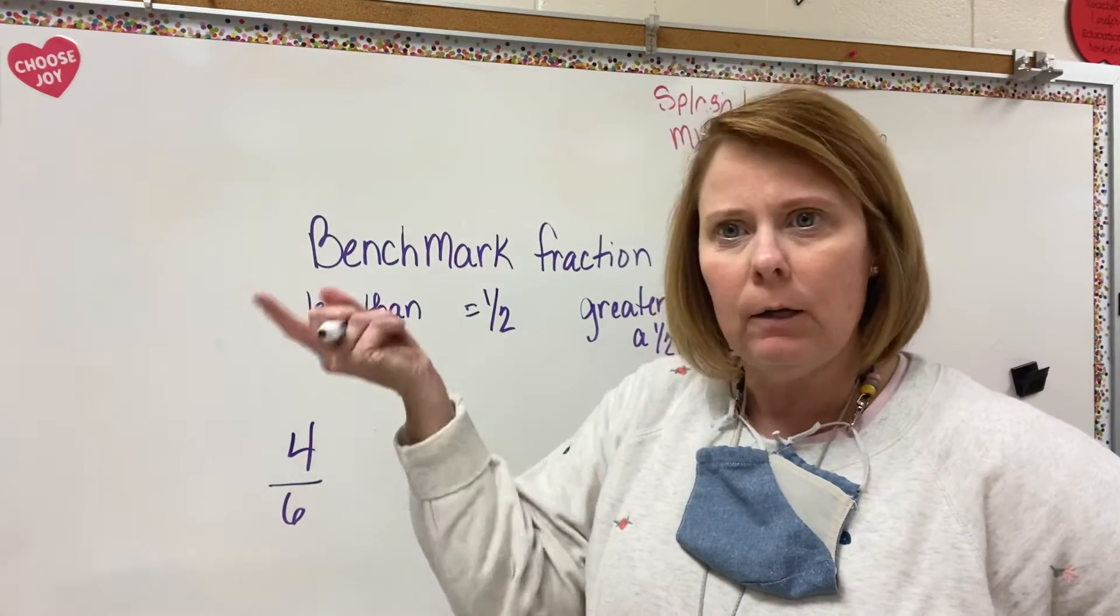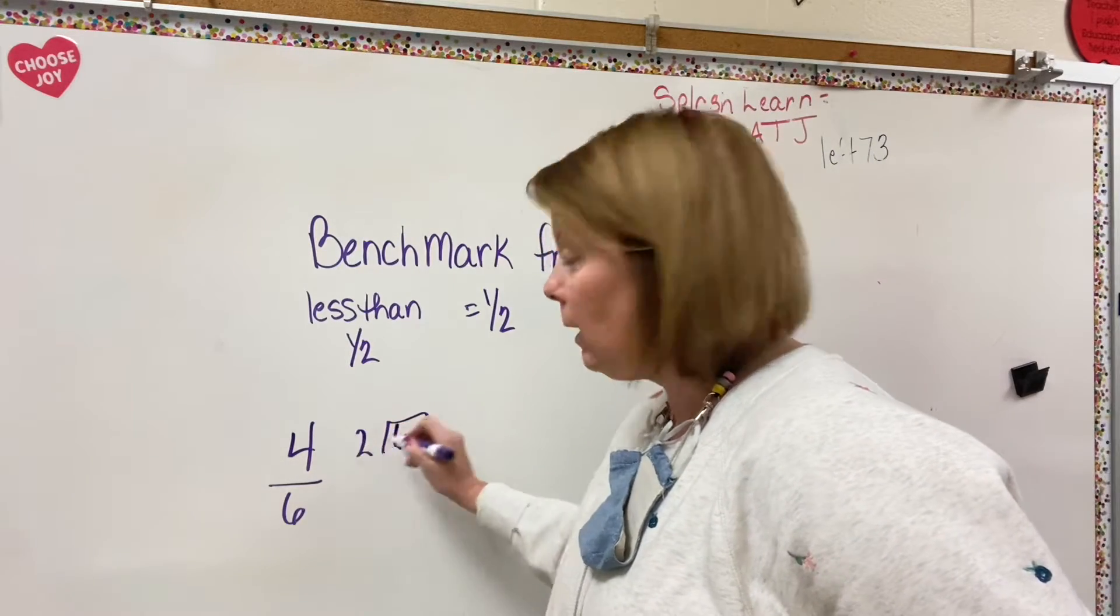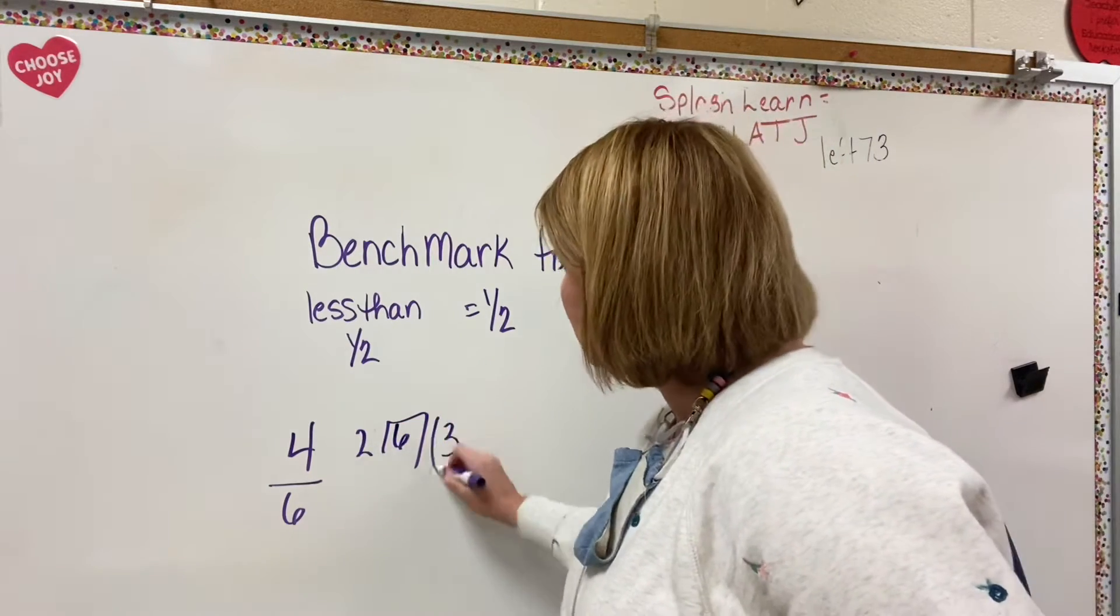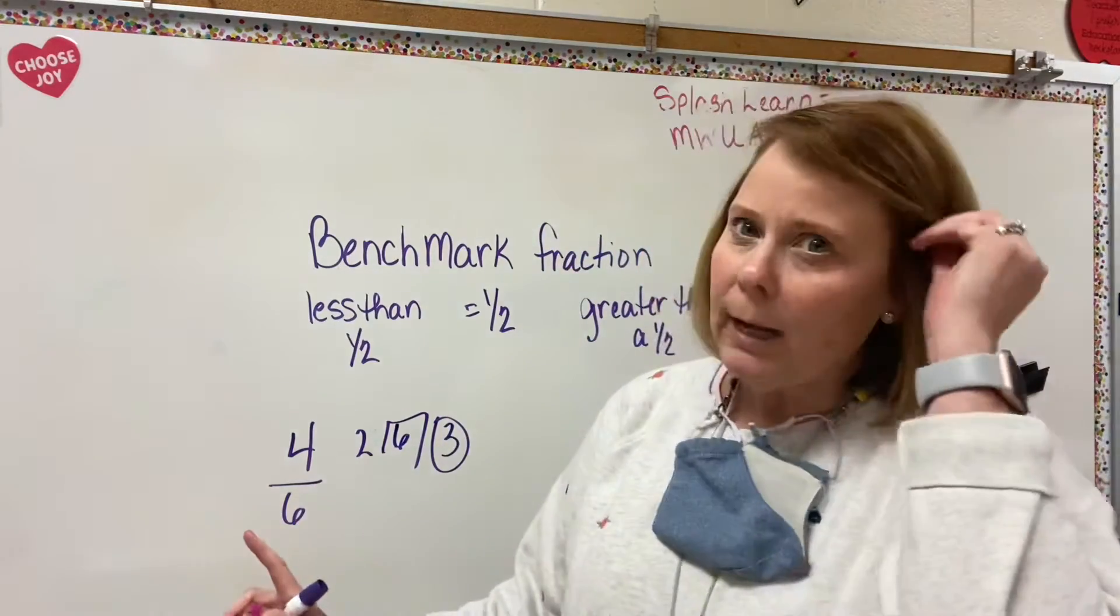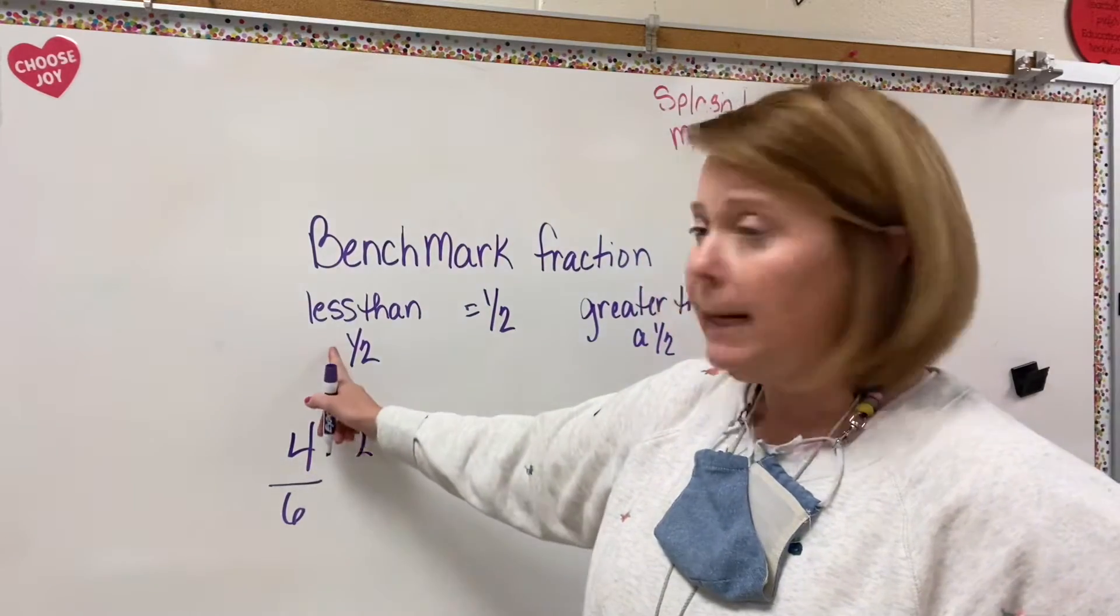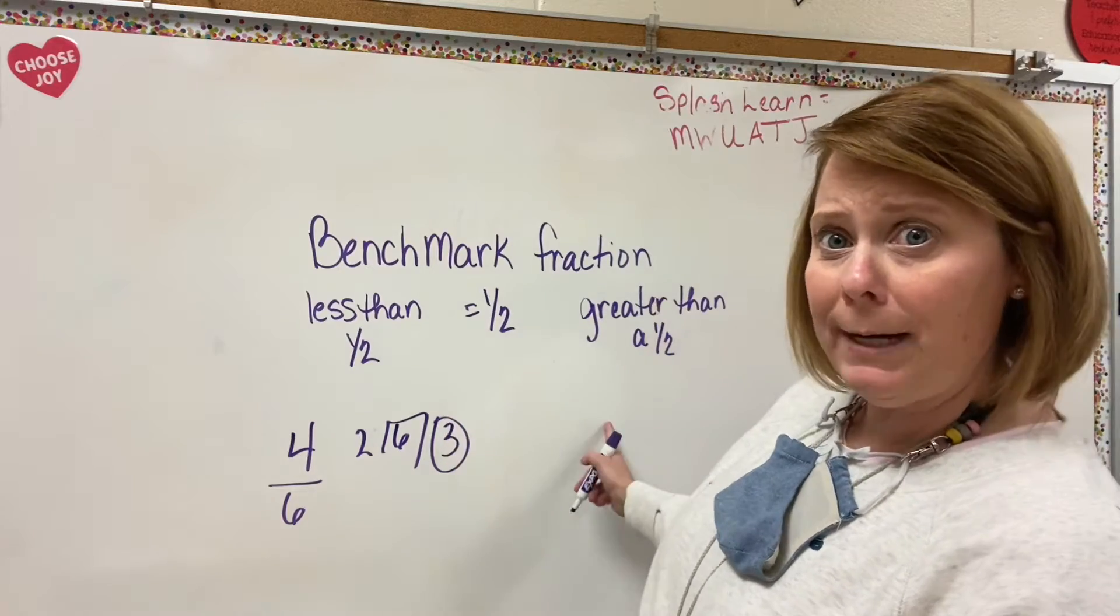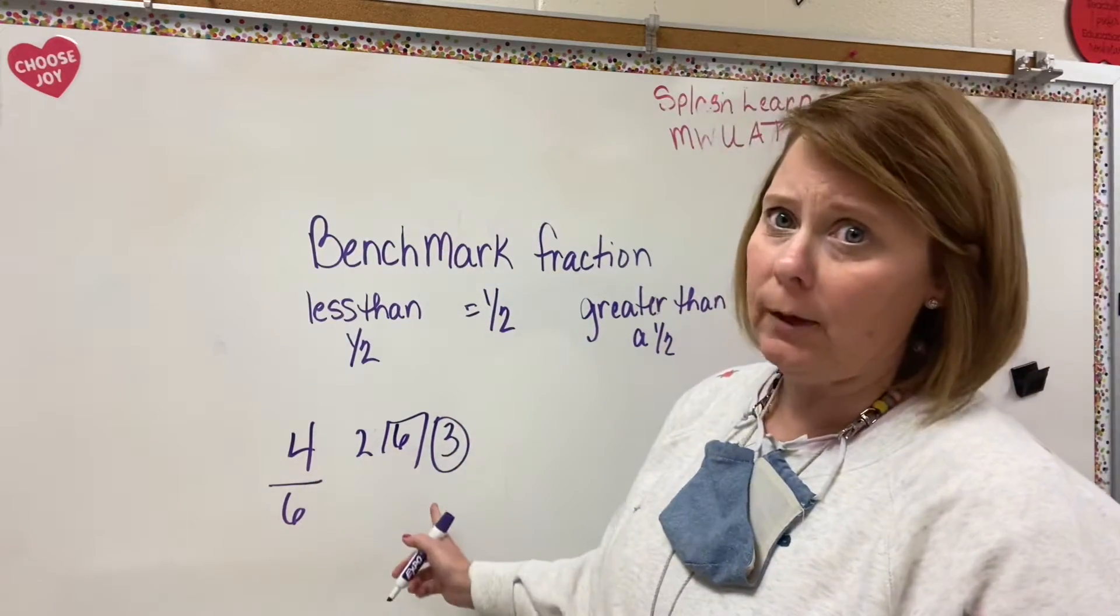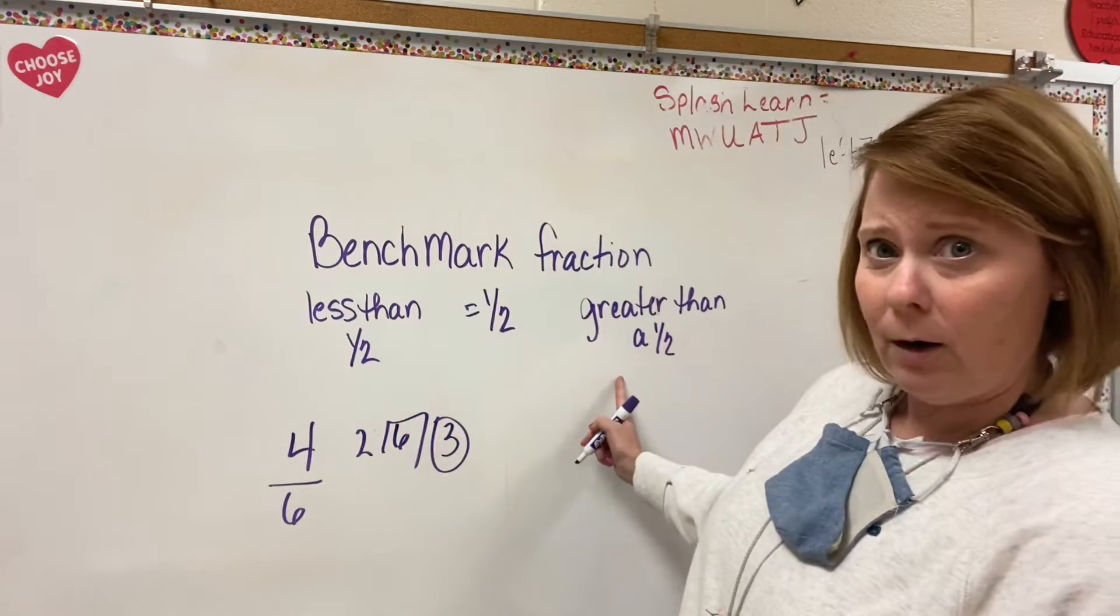Or if you already know it, score for you. 6 divided by 2, I hope you know, is 3. So the clear half of 6 is 3. So now what I have to ask myself is, 4 less than 3, equal to 3, or greater than 3? Well, 4 is greater than 3. So 4 sixths is greater than a half. Kind of seeing what I'm doing here?